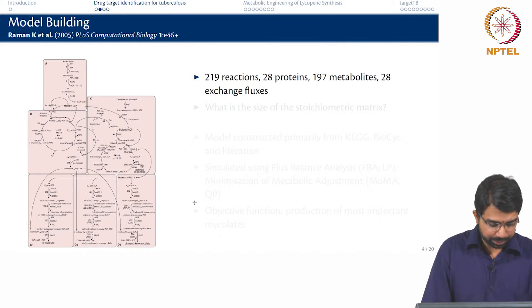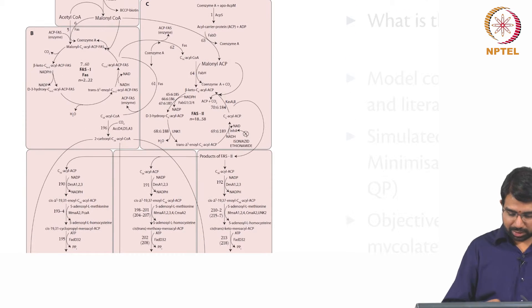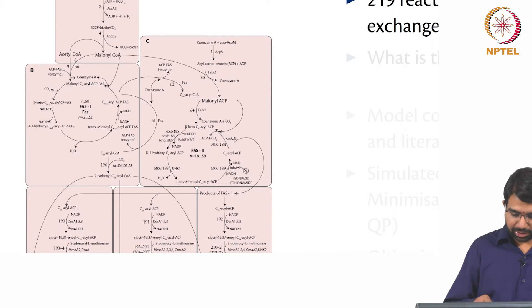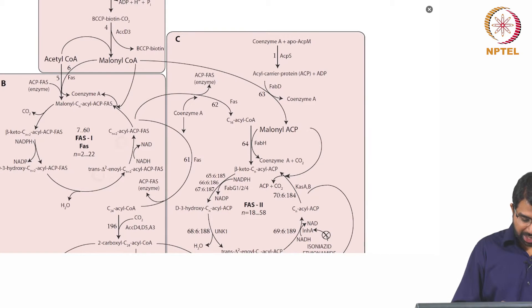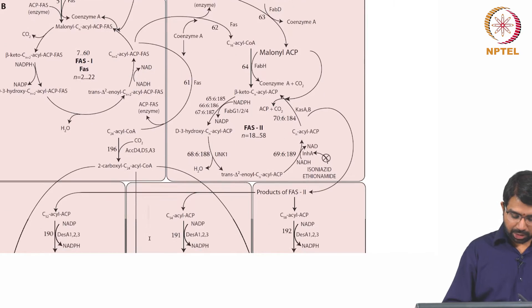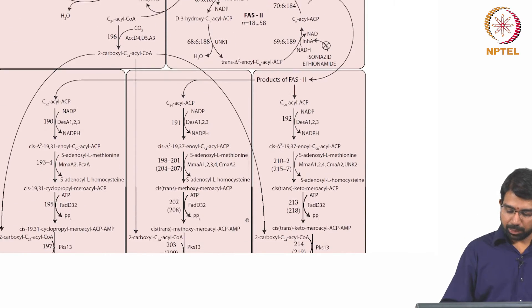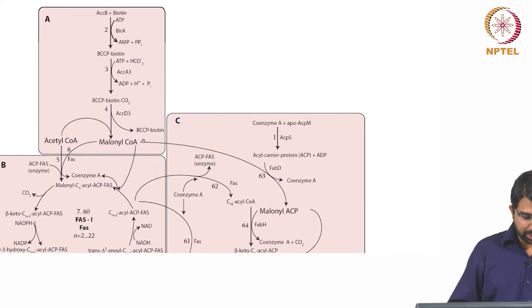So this is how the pathway looks like. If you just zoom in a little, there are four different sections here. The first is basically production of some precursor molecules. Then is what is known as the FAS-1 cycle and then what is known as the FAS-2 cycle followed by the final production of mycolates. There are five different types of mycolates. There are four main sections.